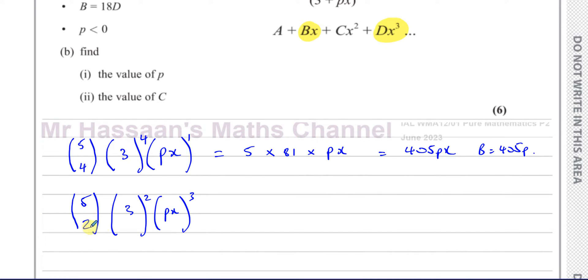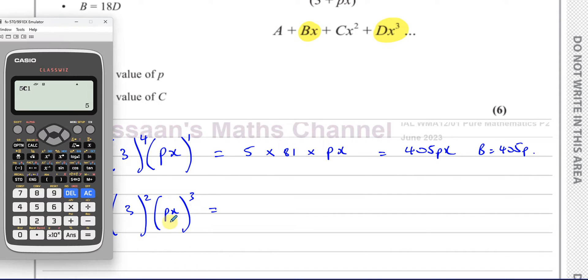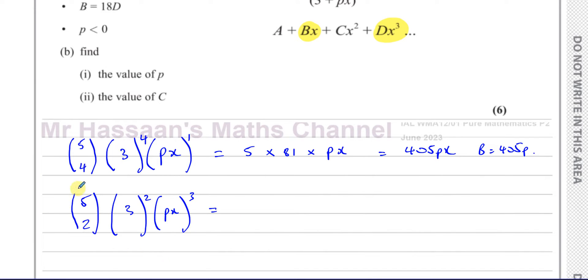So now I can put 5C2 or 5C3. Now that's going to be 10. So I still get 10 times 3 squared is 9 times and you're going to have p cubed times x cubed. So that's going to be 90p cubed x cubed. So therefore we can say D is equal to 90p cubed.